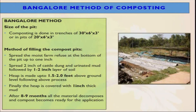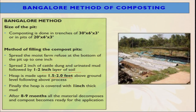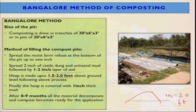We make the soil heap and cover it with a plastic sheet. This plastic sheet not only reduces sunlight entry but also reduces evaporation loss of moisture — because if moisture is less, your decomposition rate will be low. We spread 2 inches of cattle dung and urinated mud; the heap is made from ground level up to 1.5 to 2 feet. Finally, the heap is converted and covered with a thick mud plaster, but it takes more time — sometimes 6 to 7 months, sometimes 8 to 9 months to completely decompose all organic waste by the Bangalore method.